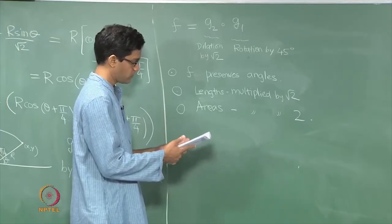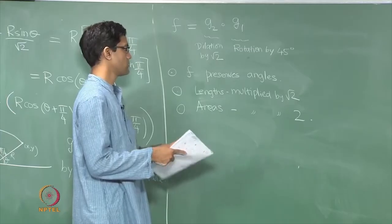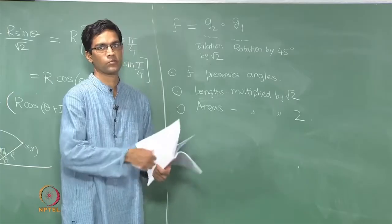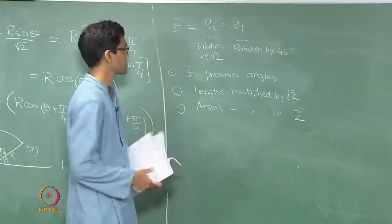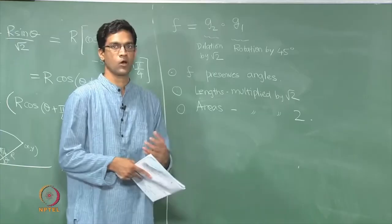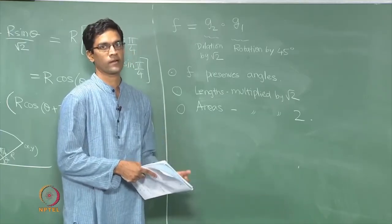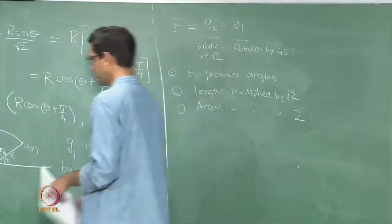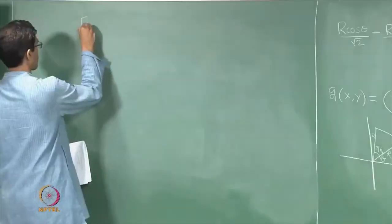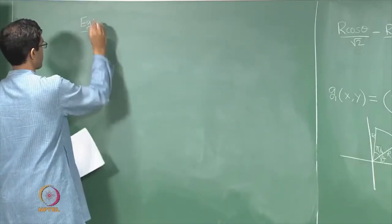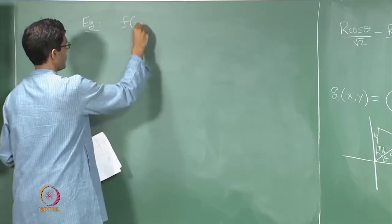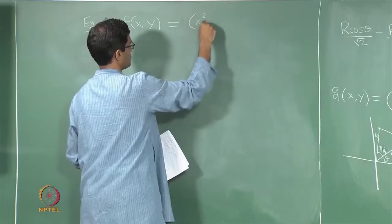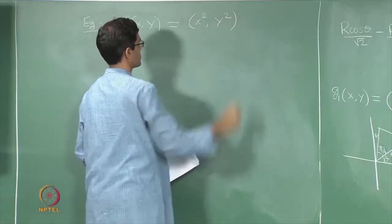This shows that simpler transformations — dilations, inhomogeneous dilations, rotations, translations — are often very good building blocks for understanding more complicated transformations of the plane. Now, one final example: let us take the function f(x,y) = (x², y²).